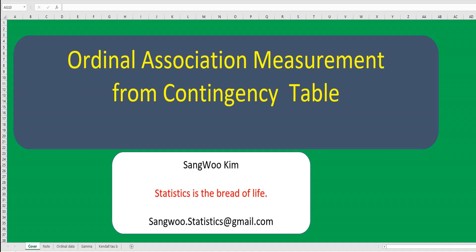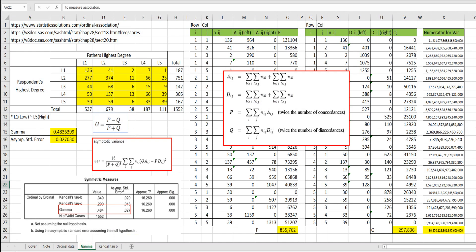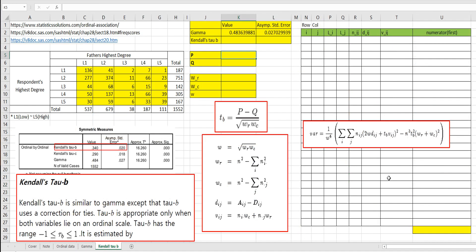Hi everyone, I am Sang-ho Kim. In this video, I would like to cover Kendall's tau-b. Last time, I showed you how to calculate gamma statistic to measure ordinal association by using concordance and discordance. Today, I would like to show you how to calculate Kendall's tau-b and asymptotic standard error.